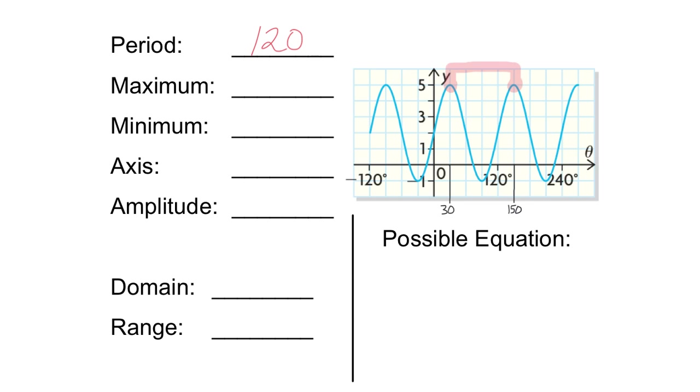Now, you can start from anywhere on the function. I could start here on the y-axis. When do I get back to that same spot? 120 degrees later. So from 0 to 120, the period is 120. Or I could even start here, until here. Well, that's from 60 to 180. That's a span of 120. So regardless of where you start, the period is always 120 for one complete cycle.